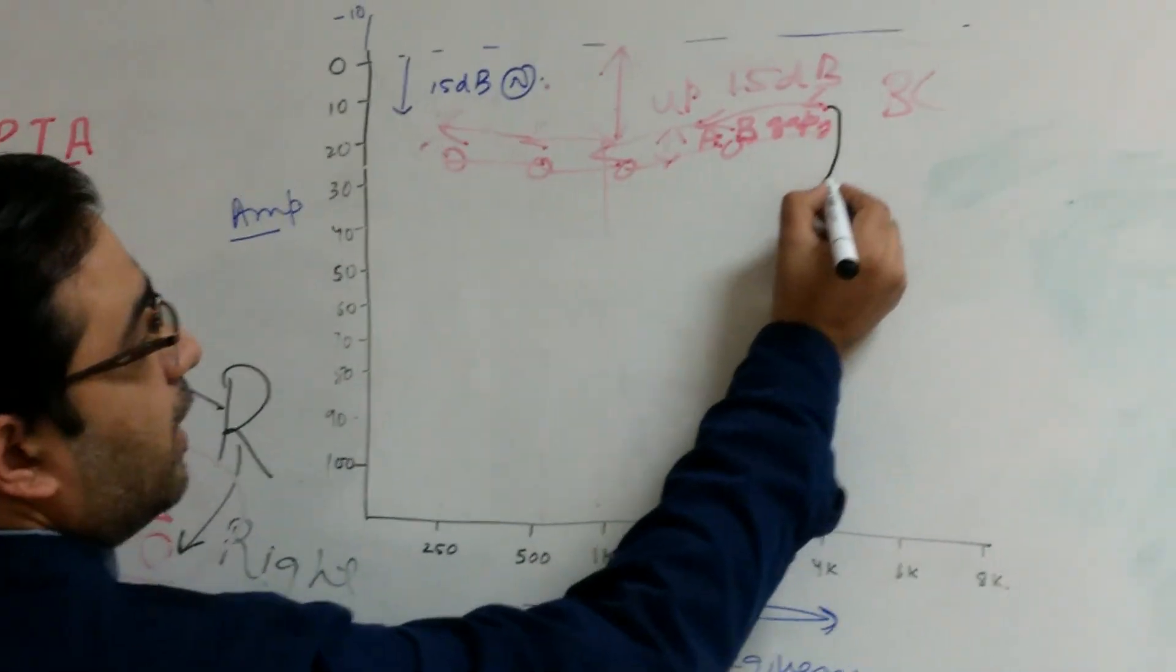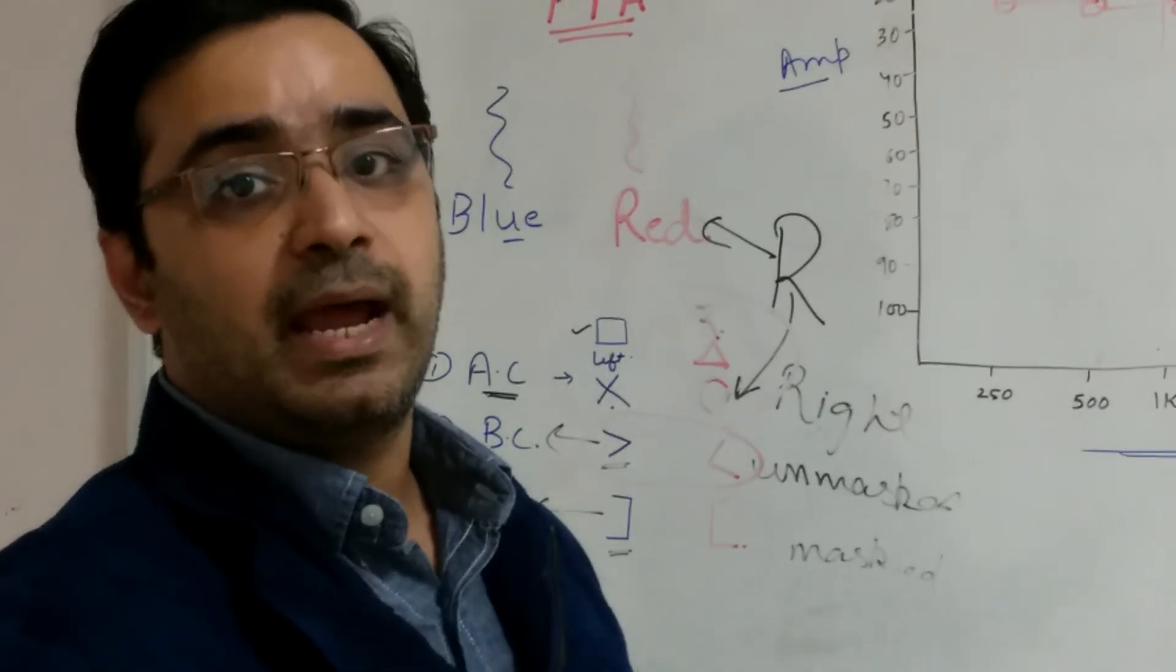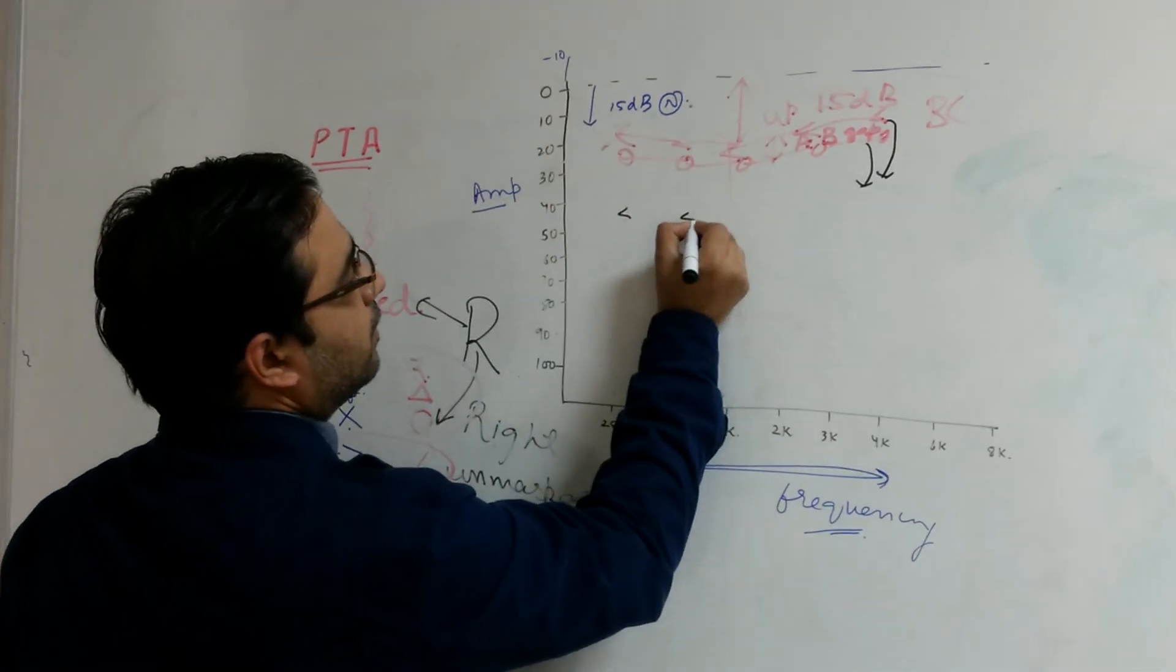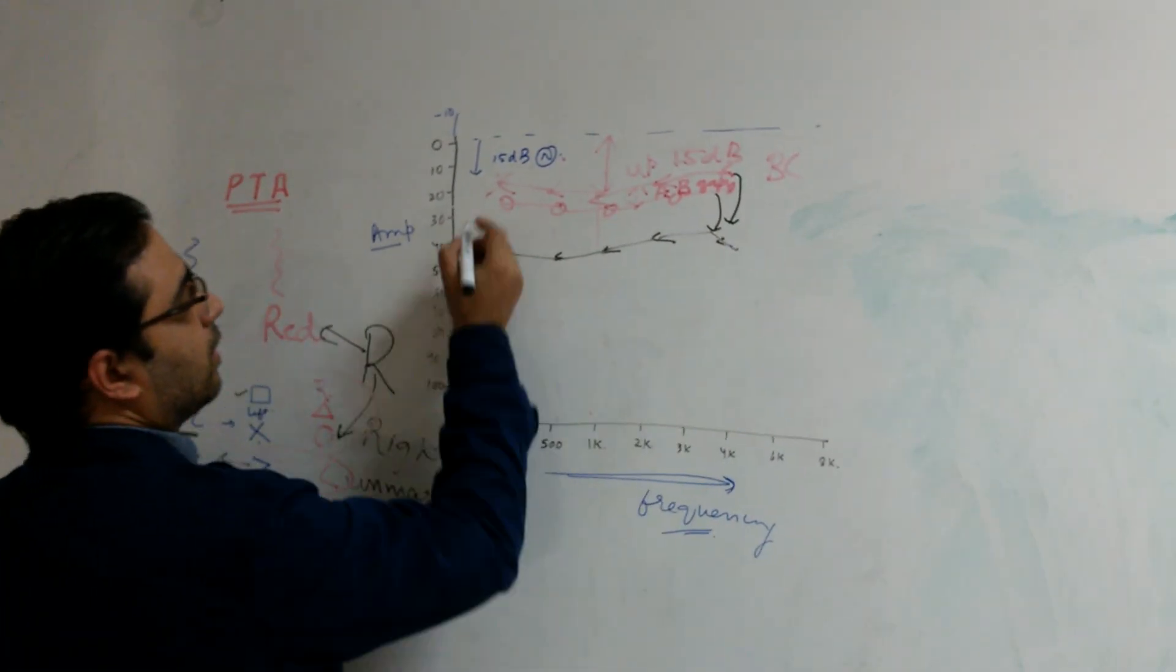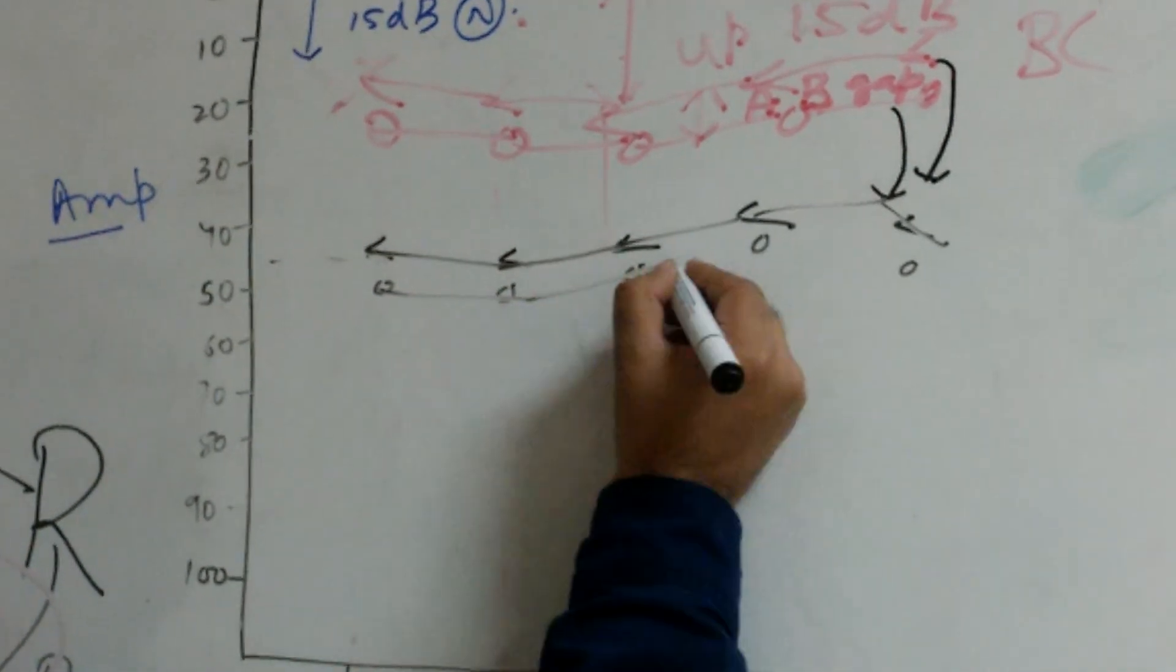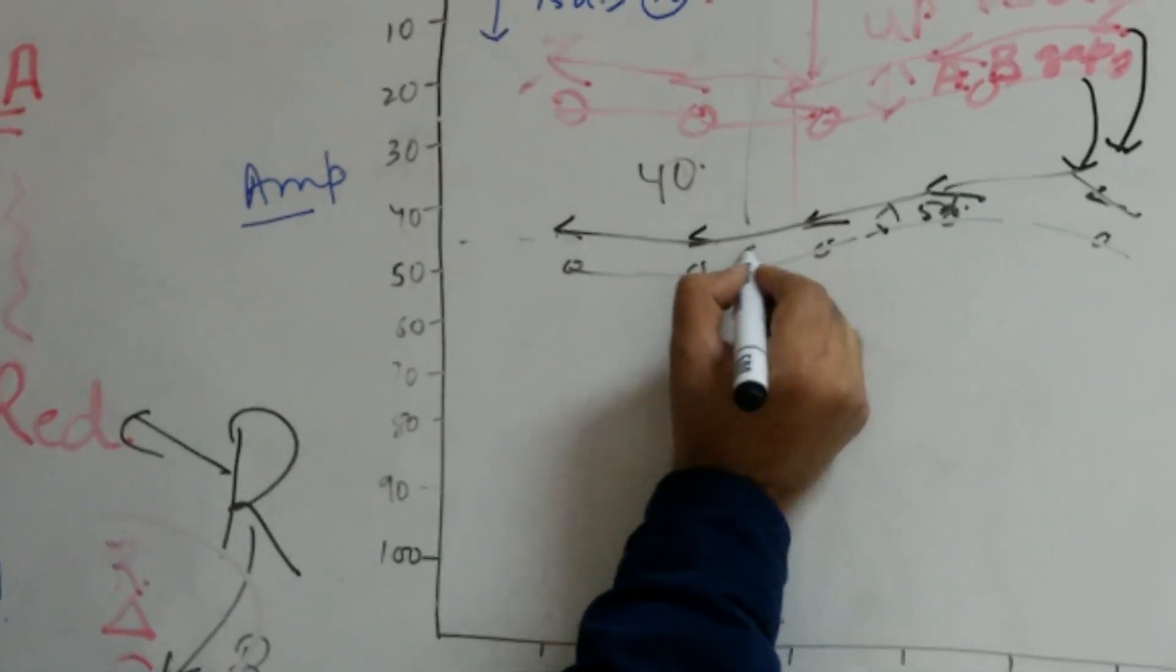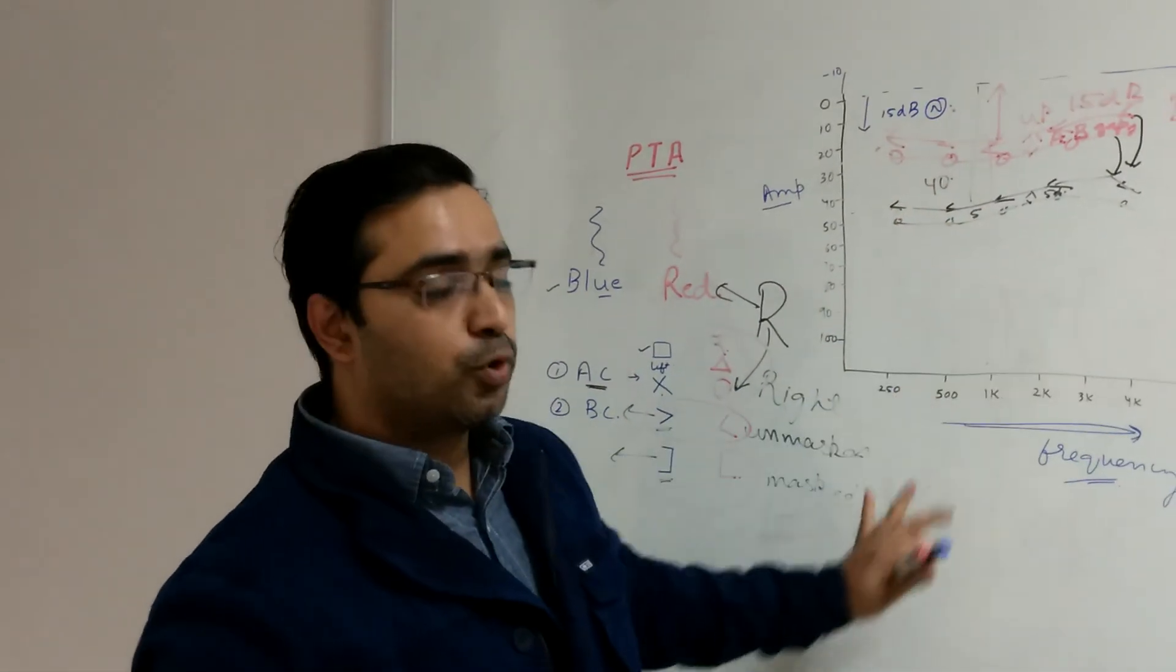If bone conduction is coming down, air conduction will always come down. And if both come down and there is no AB gap, it is sensory neural hearing loss. For example, suppose bone conduction comes to 40 decibels, air conduction comes to 45 decibels, and AB gap is 5 decibels. So this difference is 40 decibels and this difference is 5 decibels. This is pure sensory neural hearing loss.